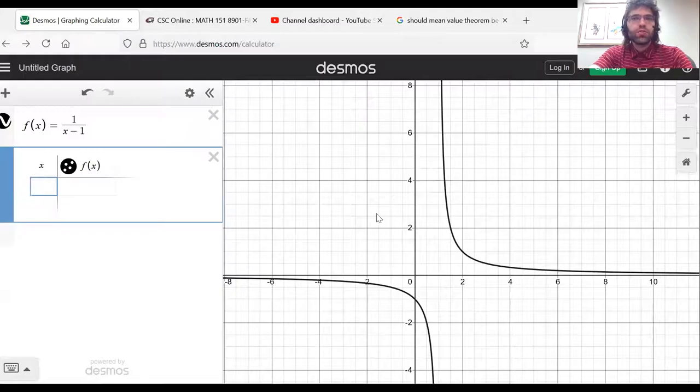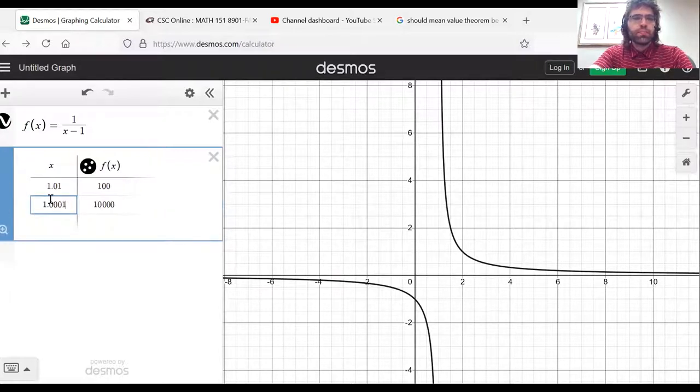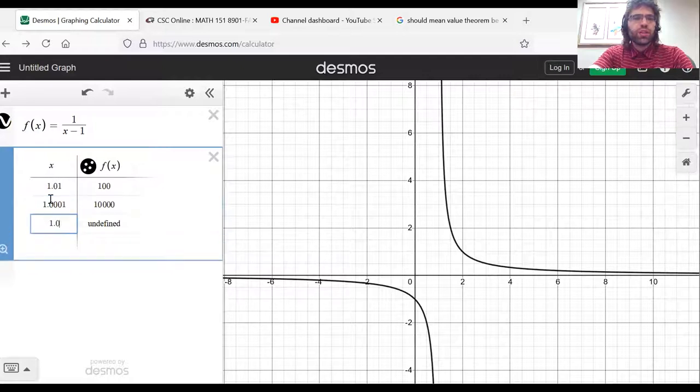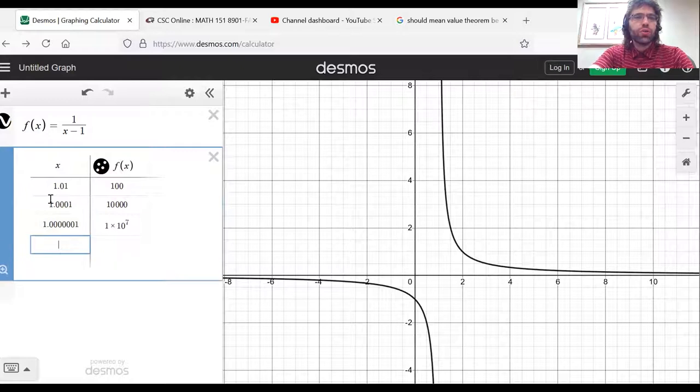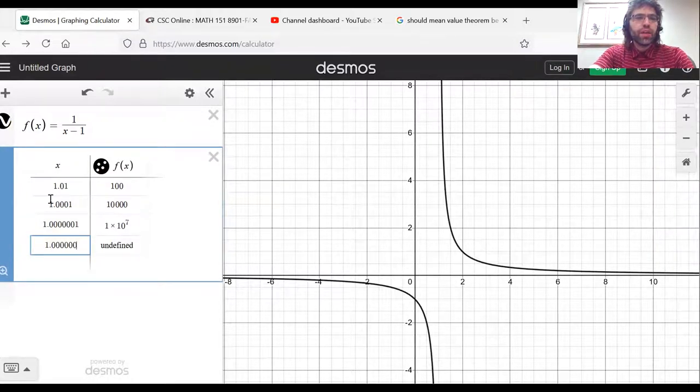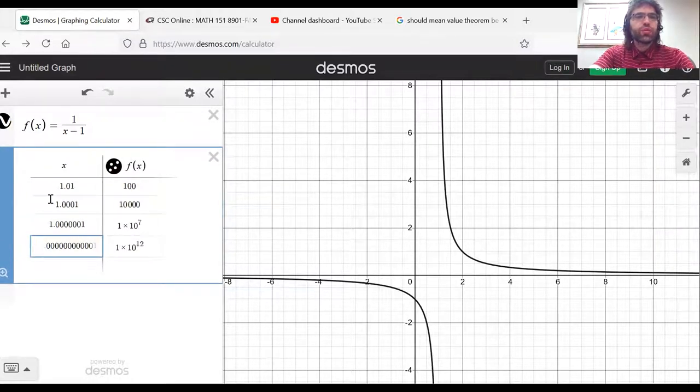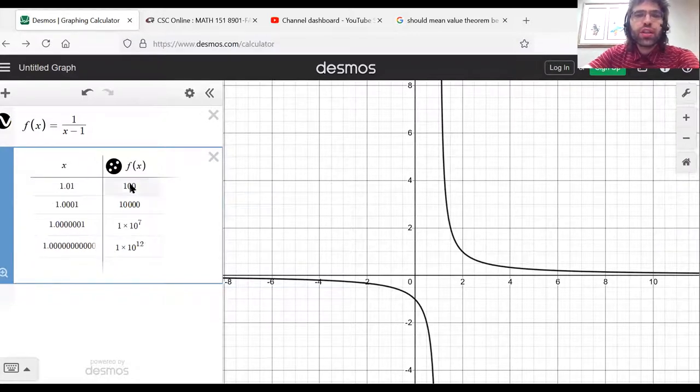Here's the graph and we'll make a table. We see that as x gets closer and closer to one, f(x) isn't approaching any finite number, it's just getting very big. The closer we get to one, the bigger f(x) gets.